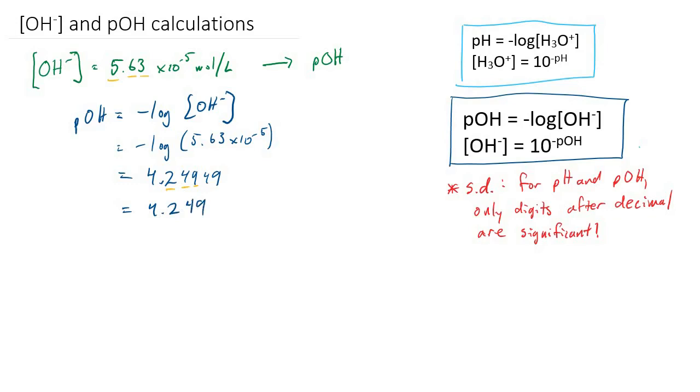So let's do one example going the other way. Suppose that we know the pOH to be 8.3, and we want to find the hydroxide ion concentration. Again, we have a formula for that: hydroxide ion concentration is equal to 10 to the minus pOH.